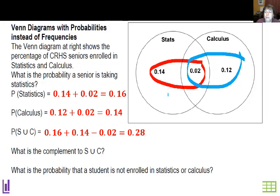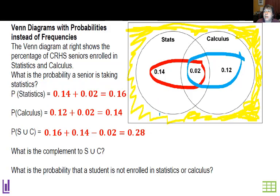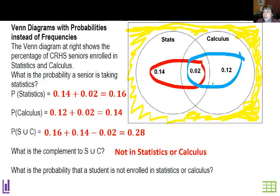Now finally, what is the complement to stats or calculus? Well that would be all of this yellow area outside of the two circles, so not in stats or calculus. So what is the probability a student isn't enrolled in one of these two classes for seniors? Well we'd say it's 1 minus the probability they're in either one, which is 0.72.